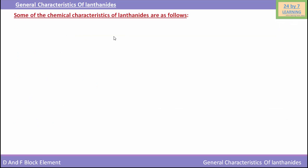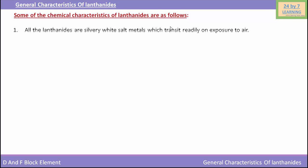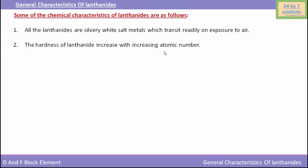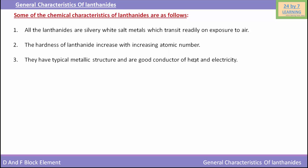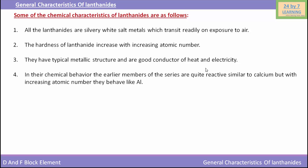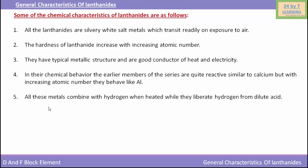Here are some chemical characteristics of lanthanides. All the lanthanides are silvery white soft metals which tarnish readily on exposure to air. The hardness of lanthanides increases with increasing atomic number. All the lanthanides have typical metallic structure and are good conductors of heat and electricity. In their chemical behavior, the earlier members of the series are quite reactive, similar to calcium, but with increasing atomic number they behave like aluminum.